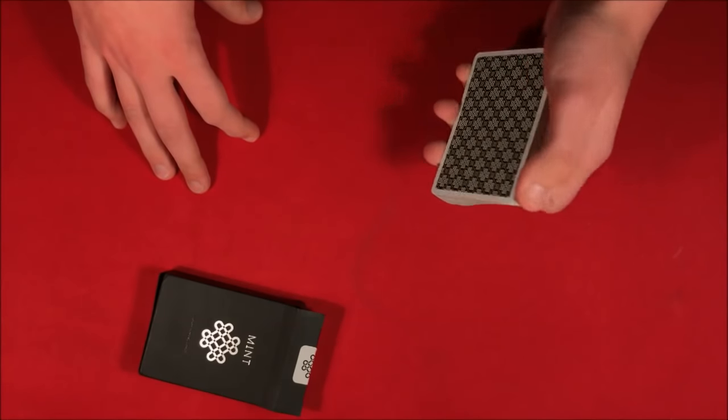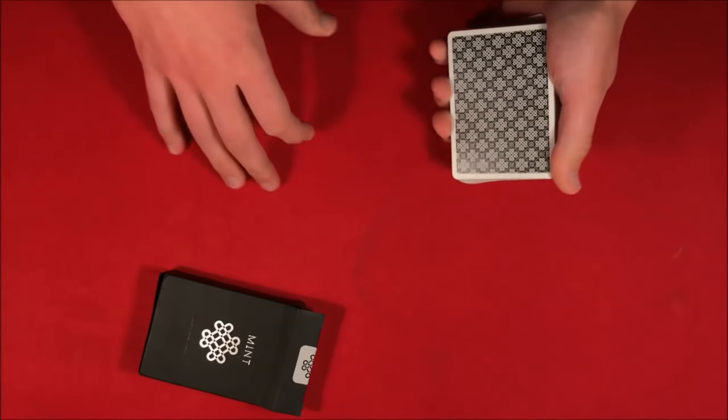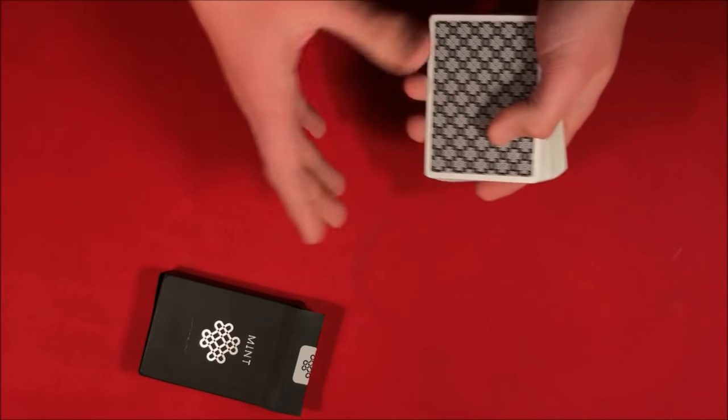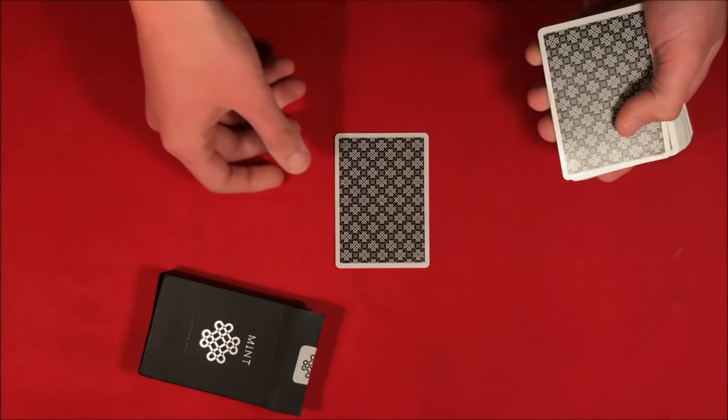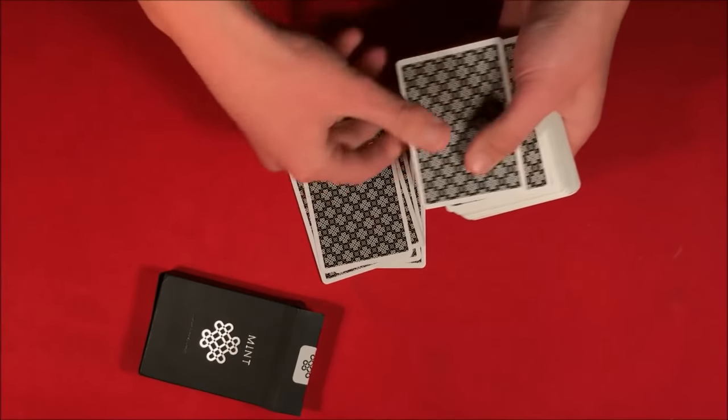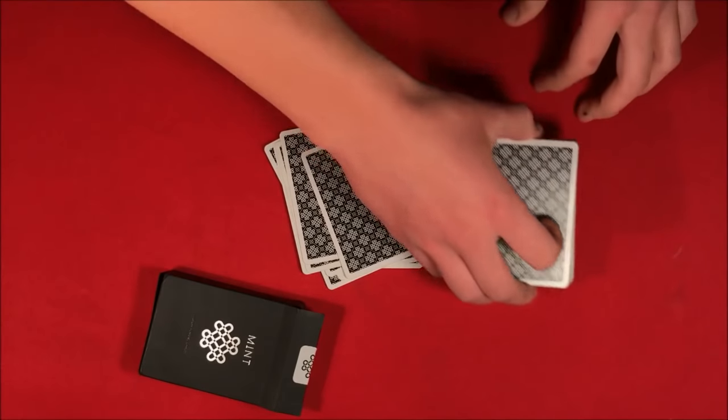To start off this trick, let's say we have the spectator pick a number 10 through 20. Let's say they wanted to pick a number like 15. They could have picked any number they wanted to. They picked 15. So 1, 2, 3, 4, 5, 6, 7, 8, 9, 10, 11, 12, 13, 14, 15.